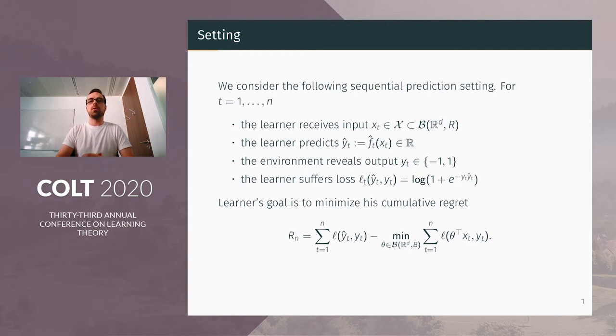The inputs are vectors with dimension D and L2 norm bounded by R. The learner predicts a real value, and the environment reveals an output y_t which is binary, minus one or one.